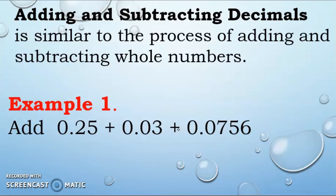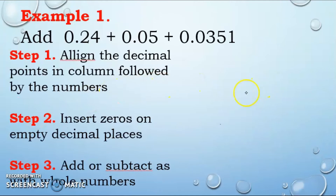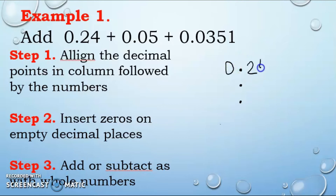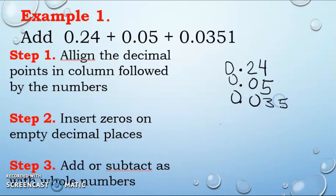For example: add 25 hundredths plus 3 hundredths plus 756 ten-thousandths. Step 1: align the decimal points in a column, followed by the numbers. We align the decimal points first, then write down the digits: 0.2400, 0.0300, and 0.0351. We then insert zeros on the empty decimal places so all numbers have 4 decimal digits.